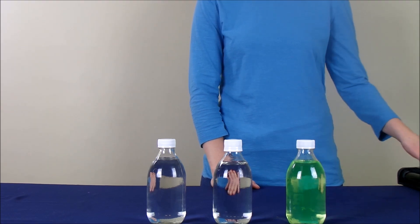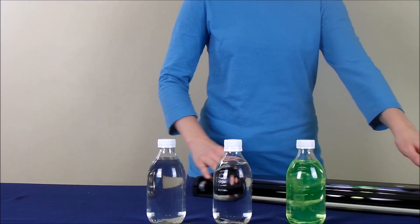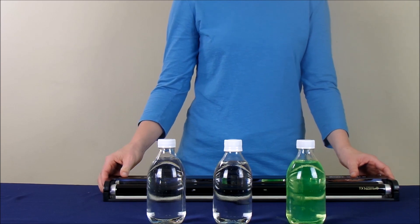Now, for the next step, you should position your black light next to your bottles. Then, we're going to turn out the lights and turn the black light on.